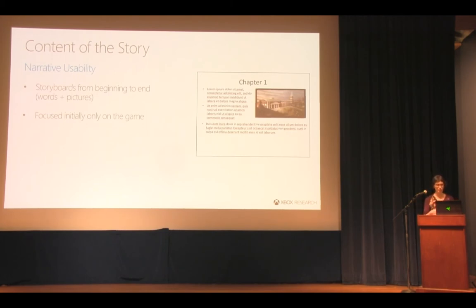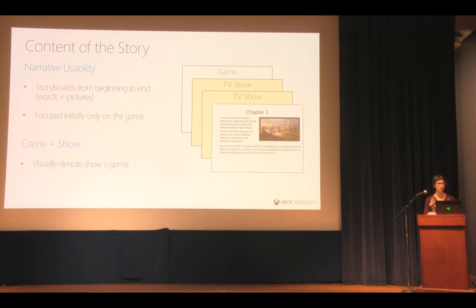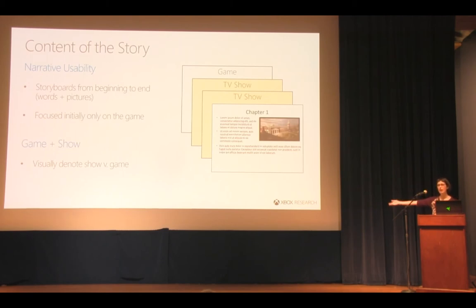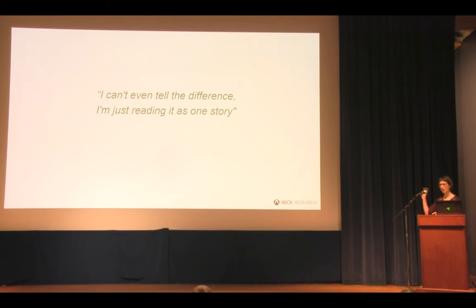The team iterated on that and we then started layering in the show. We did another narrative usability, but visually denoted when we were moving to the show — in a fundamentally non-subtle way: an enormous television on screen with slides written inside it. We had one key question: is it one story or is it two? We knew the game story made sense, but would the extra information from the show feel relevant? The good news was yes — we got feedback like 'I can't even tell the difference, I'm just reading it as one story.' People were actively confused that we thought it might be two stories, despite there being two separate protagonists: Jack in the game and Liam in the show.